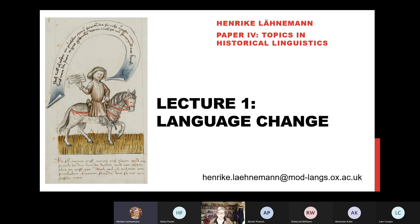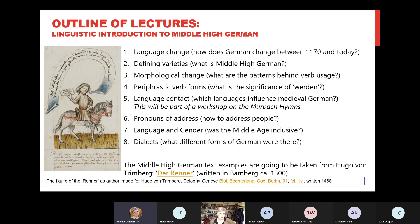Welcome to the Paper 4 lectures, which are designed to give you a survey of the development of Middle High German and the changes from Middle High German to Modern German. I've structured it in a way that we are taking the topics that are also the tutorial topics for the historical linguistics paper — all of those that are kind of pre-modern — and go through it with application to a specific text, a text that is very dear to my heart.